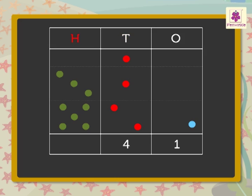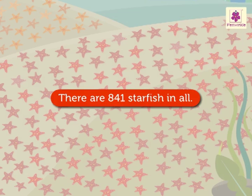Now, add the hundreds. That is, 3 green dots plus 5 green dots is equal to 8 hundreds. So, we get in all 8 hundreds, 4 tens, and 1 one, which is equal to 841. Thus, there are 841 starfish in all.